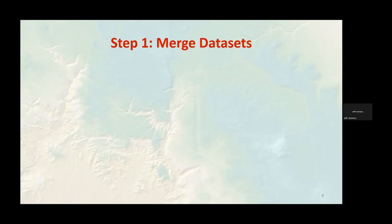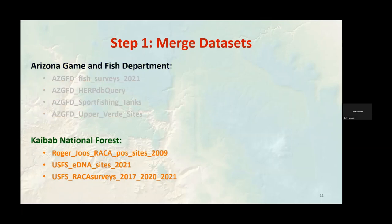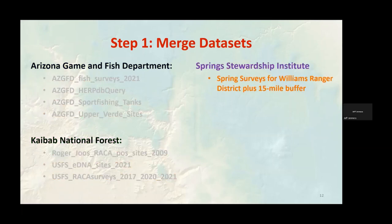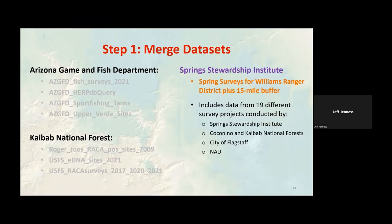We started with eight datasets describing water sites and bullfrog surveys in and around the Williams Ranger District. These water sites could include springs, ponds, and stock tanks. Four datasets were provided by the Arizona Game and Fish Department, three from the Kaibab National Forest, and one from the Spring Stewardship Institute. The Spring Stewardship Institute dataset came from Springs Online and included survey data from 19 different research projects conducted by the Spring Stewardship Institute, Forest Service, City of Flagstaff, and NAU.